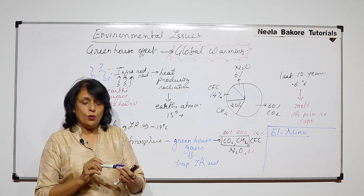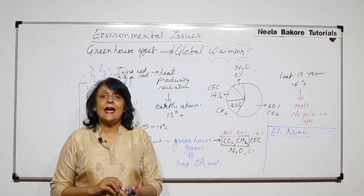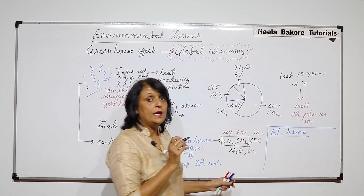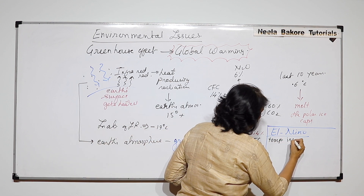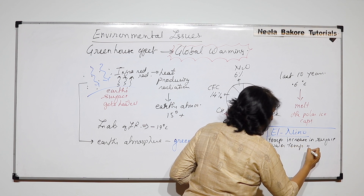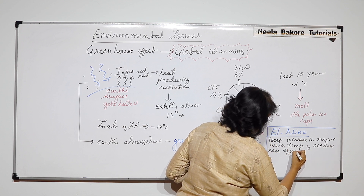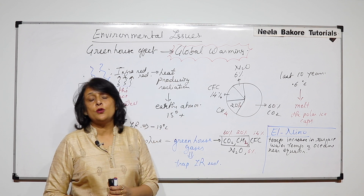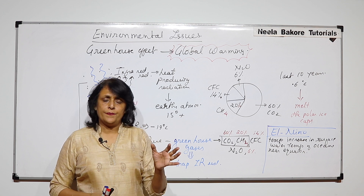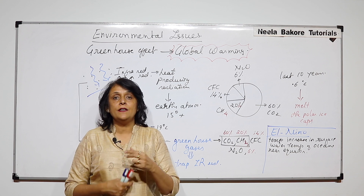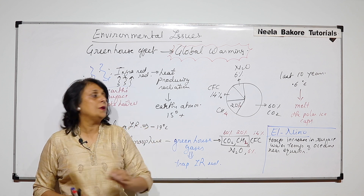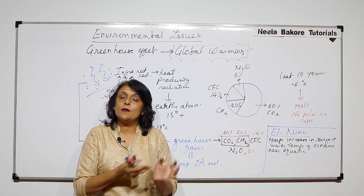Because of the same thing, there is one more change called the El Niño effect. Near the equator, the surface temperature of oceans is increasing — it is a temporary increase in the surface water temperature of oceans near the equator. Earlier El Niño was a phenomenon that would repeat itself every 10 years, then it became seven years, then five years, then three years.